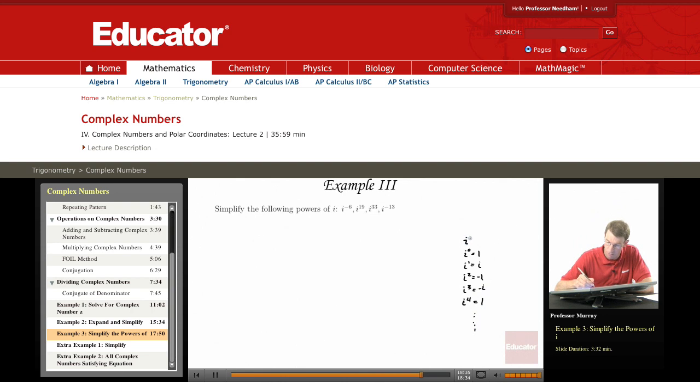i to the negative 1 is negative i, i to the negative 2 is negative 1, i to the negative 3 is i, and i to the negative 4 is 1. So it goes in cycles of 4 in both directions, so what we have to do is look at these exponents and try to reduce them down by 4s.